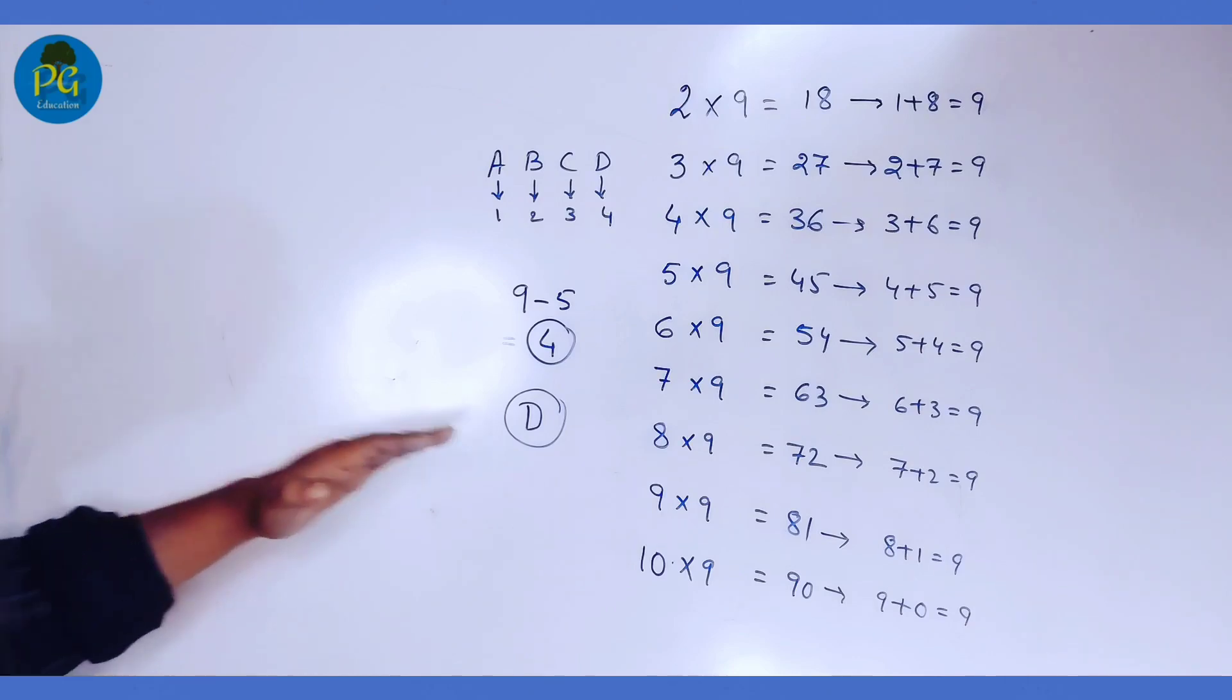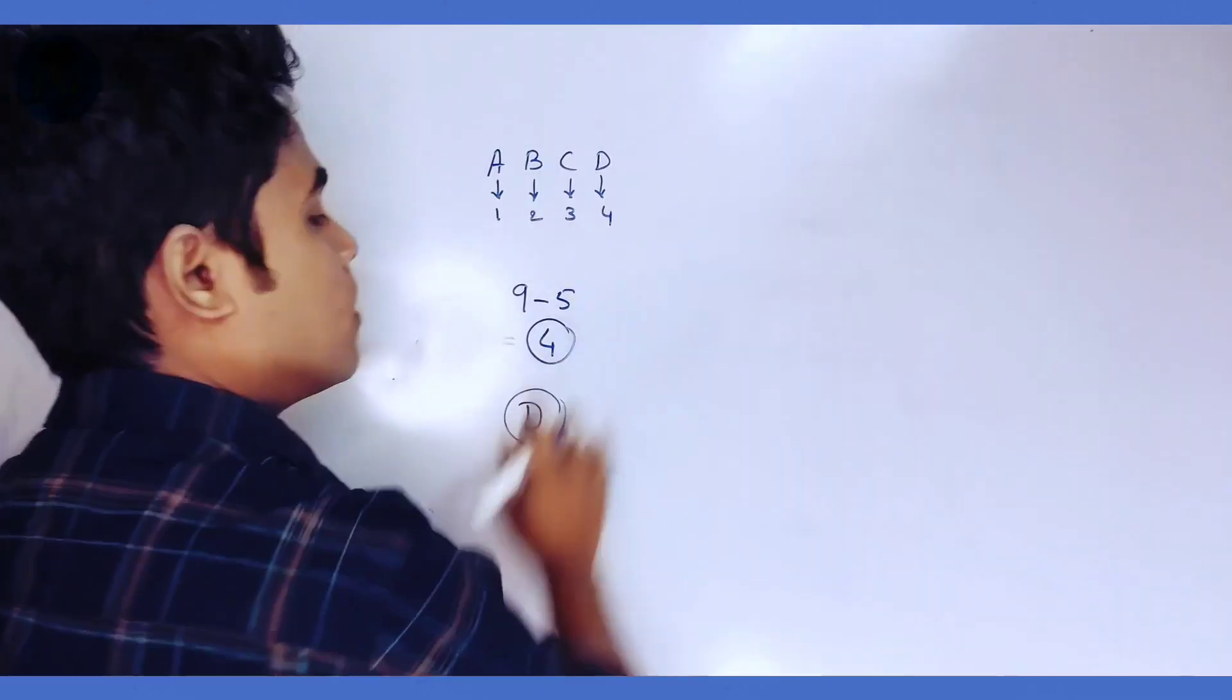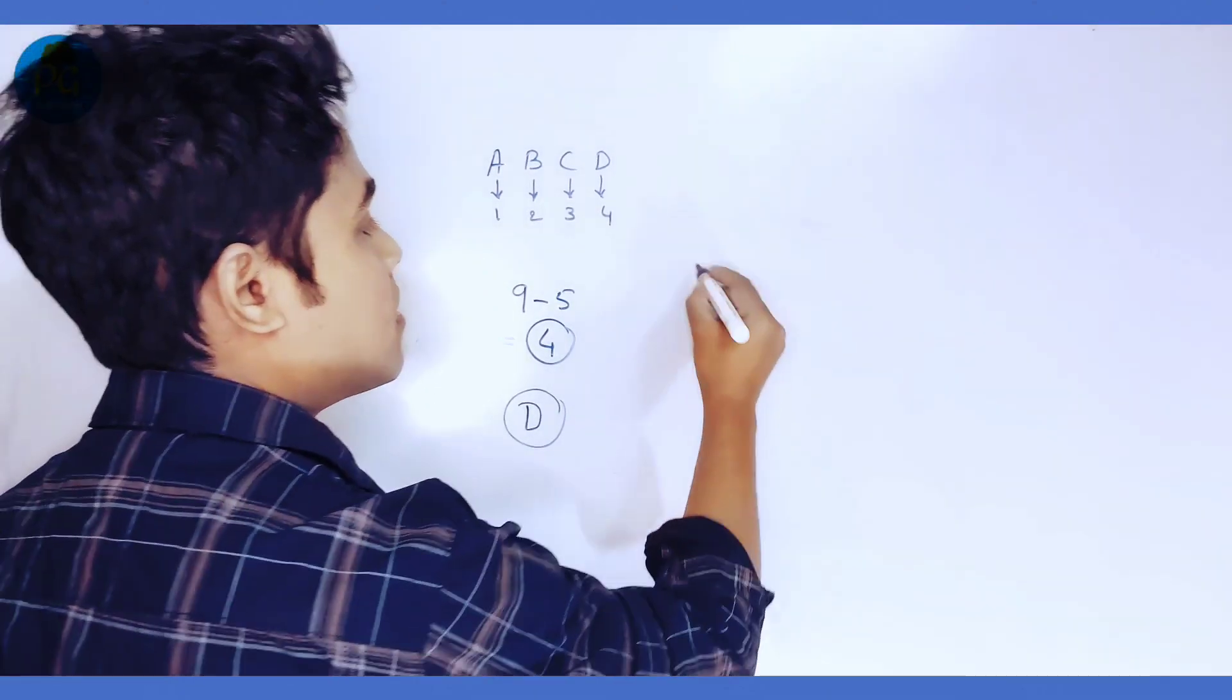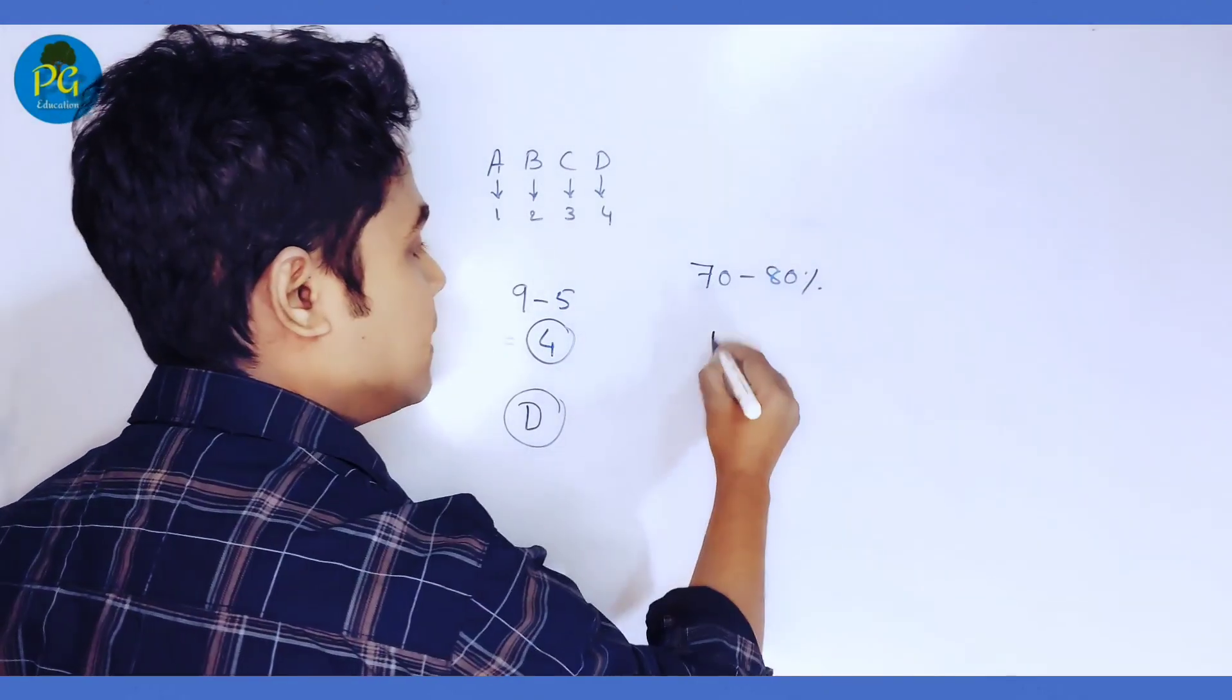Now, you have to think about a country name which starts with D. If you ask 100 people, out of 100 people, 70 to 80% will say Denmark.